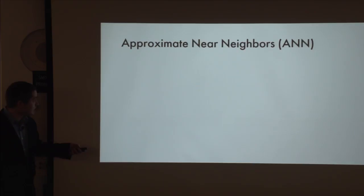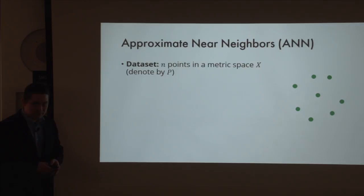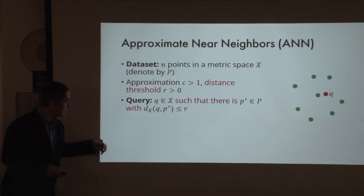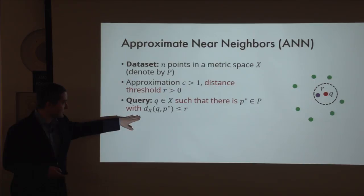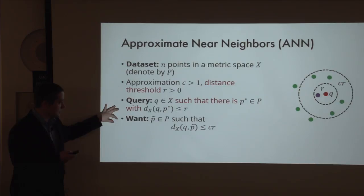Let's define the problem we will be solving. It's called approximate near neighbors, known as ANN. We have N points in some metric space X. We preprocess them so that later, whenever we receive a query—just another point Q—and we have a guarantee that there is at least one data point within distance R from it (where R is a distance threshold), we return any data point within distance CR from the query. C is another parameter: the approximation we are willing to tolerate.